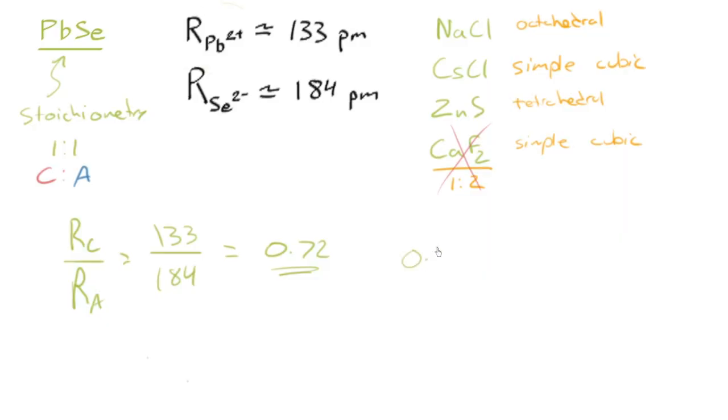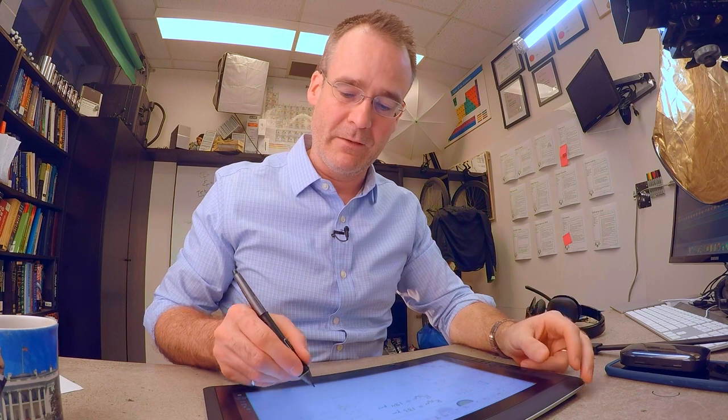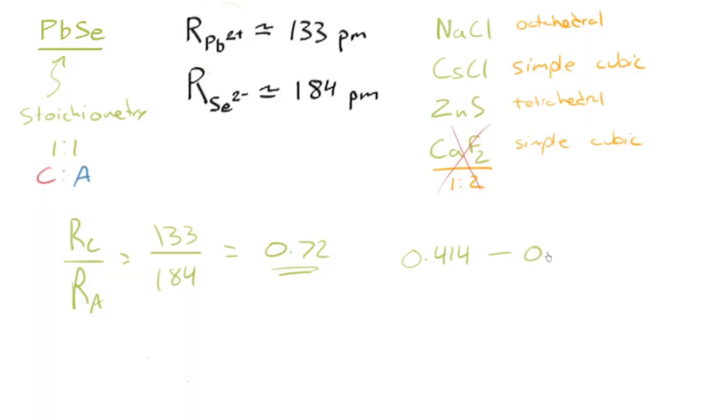The minimum size of the cation that fits into the octahedral site was 0.414. And the minimum size of the cation that would just fill the simple cubic site, as we worked out in another video, was 0.732. So 0.72 clearly fits into that. It's close to the upper range, but it clearly fits into the size range that we need for the octahedral site.